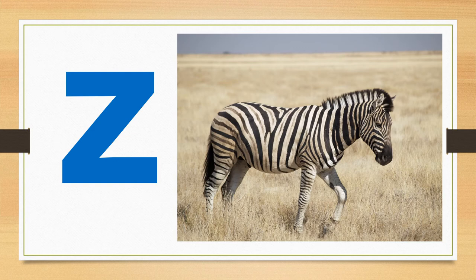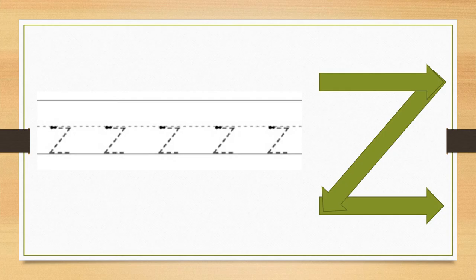Z says Z. The word zebra starts with the sound Z. Z. Zebra. Z. Say it with me. Z. Zebra. Z. Let's practice writing the letter Z.